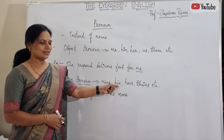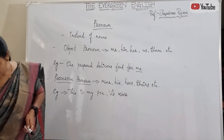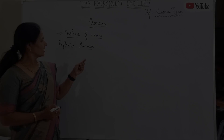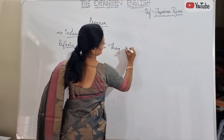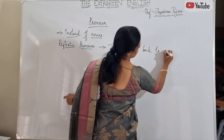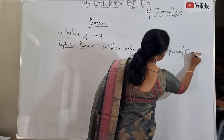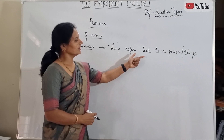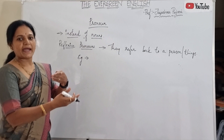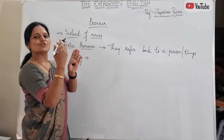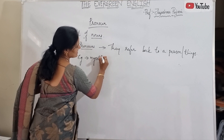The last pronoun is reflexive pronoun. Reflexive pronouns refer back to a person or thing. Reflexive, meaning back to ourselves — back to the noun. For example, 'I' changes to 'me,' 'me' changes to 'mine,' and 'mine' changes to 'myself.' So 'myself' is the reflexive pronoun. Reflex means coming-back movements.